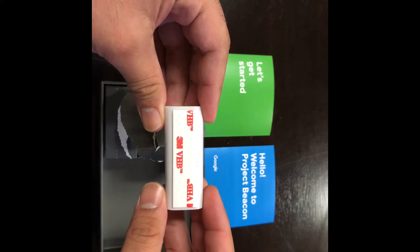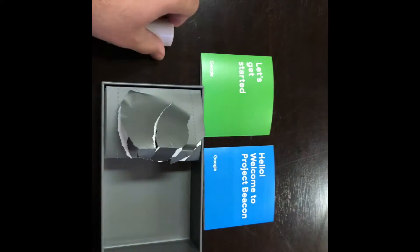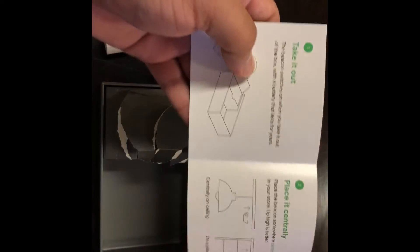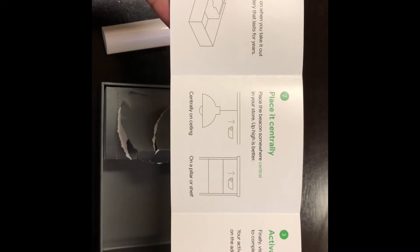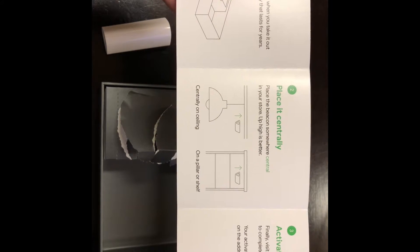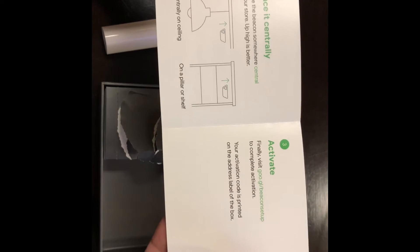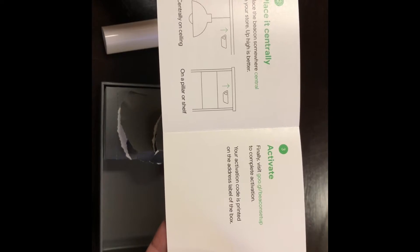Let's get started with the booklet. It's very self-explanatory. The booklet here tells you exactly what you need to do with the beacon. You need to take it out, place it centrally in your office, and go to the website to actually activate it, which I will be showing on a different video.